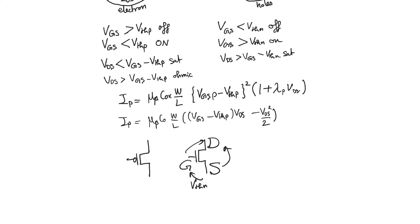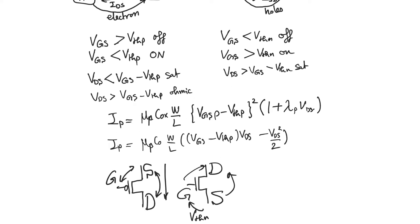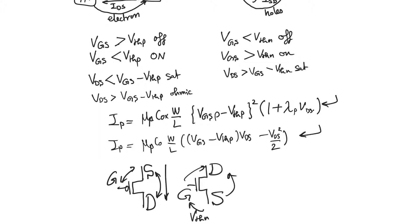In general for the NMOS, the drain is the higher potential, the source is the lowest potential, and the gate lies somewhere in between. If the NMOS is to be on, the gate has to be higher than the source by at least V-threshold-N. For the PMOS, the source is the highest point, the drain is the lowest point, and the gate lies somewhere in between. VGS is a negative potential and VDS is also a negative potential. It is very important to notice that V-threshold-P, the PMOS threshold voltage, is a negative number.